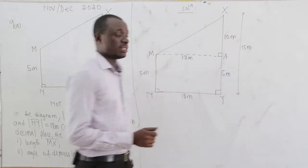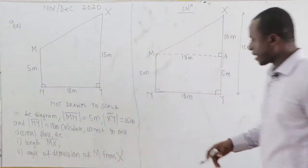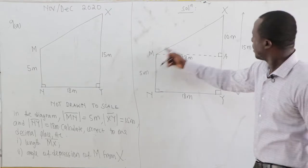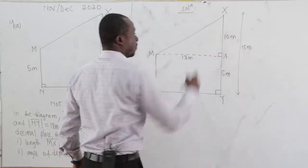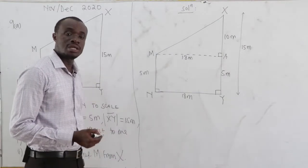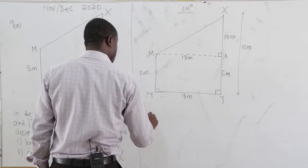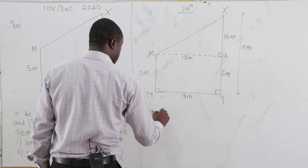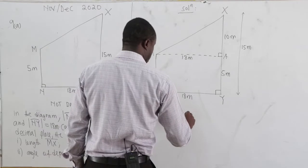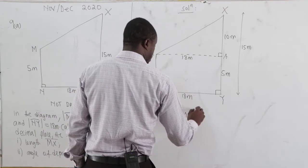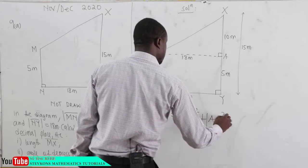Now, the question says we should find MX. For us to find MX, we clearly have a right-angle triangle. So, using the Pythagoras theorem, MX squared is equal to MA squared plus AX squared.